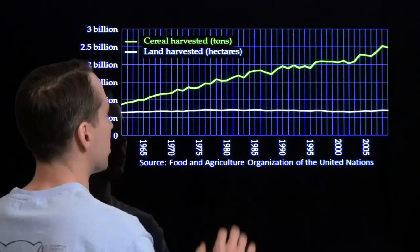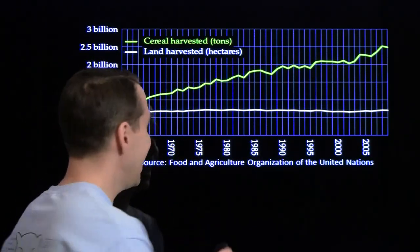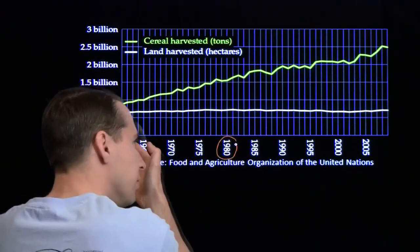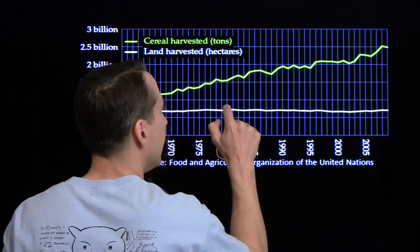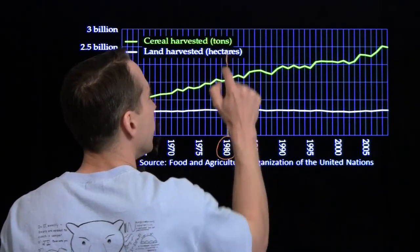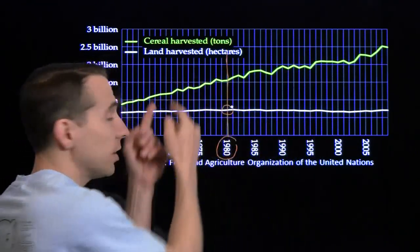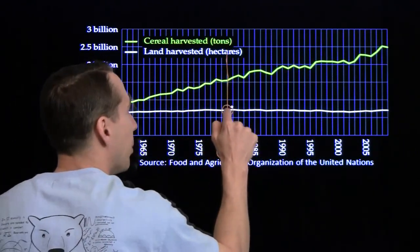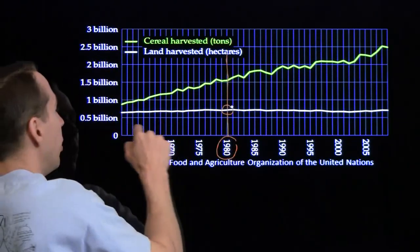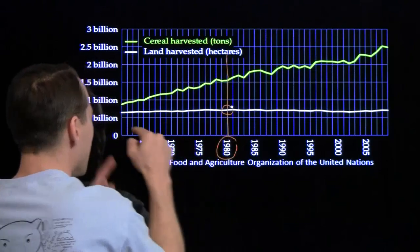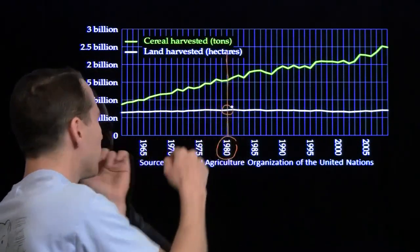Now let's talk about how to read this graph. Say we're interested in the amount of cereal harvested and the amount of land harvested in 1980. We find 1980 on the horizontal axis and go up the 1980 line. Where it hits our white line — the line for land harvested — we read back to the vertical scale. The amount of land harvested is somewhere between 0.5 billion and 1 billion hectares, a little closer to 0.5 billion.